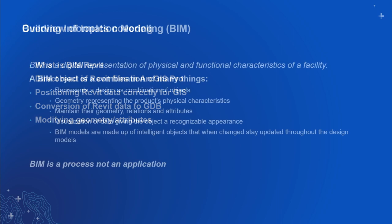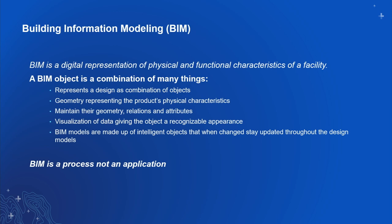Building Information Modeling — what is it? Really, it's a digital representation of the physical and functional characteristics of a facility. It's a representation of complex objects that have a relationship with each other. So if I have a room in my BIM file, I know that light is hanging off that ceiling, that floor is connected to the wall, and there's a window or door in the wall. That idea of connection is what BIM really is.